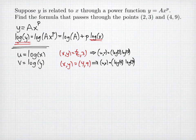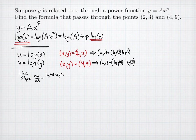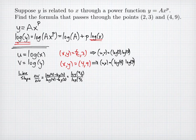The slope is the change in v over the change in u. Using our two points: slope equals (log 9 minus log 3) divided by (log 4 minus log 2). Using properties of logarithms, that becomes log(9/3) over log(4/2), which is log 3 divided by log 2. This slope will be the power in the power function.